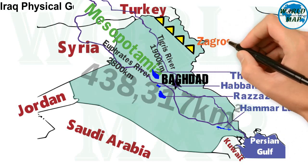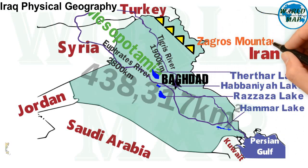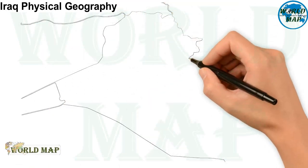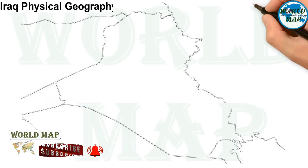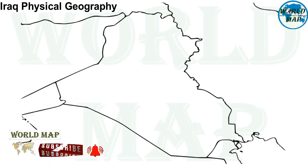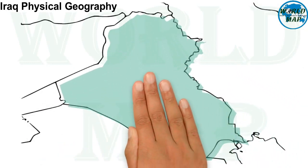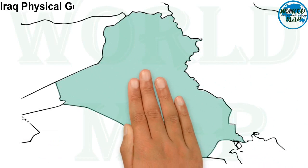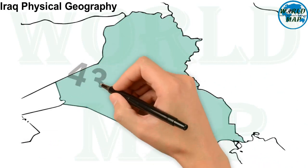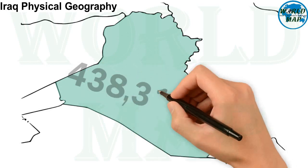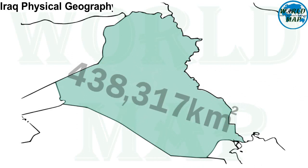Physical geography of Iraq. The total area of Iraq is 438,317 square kilometers.